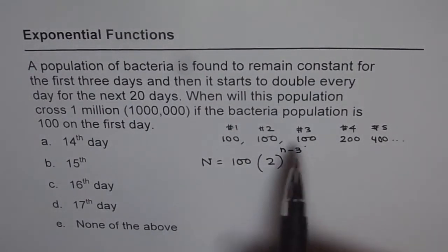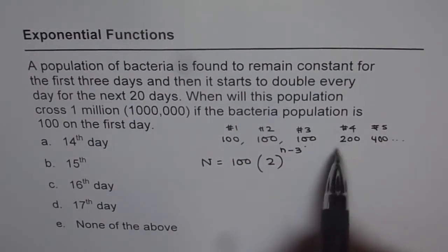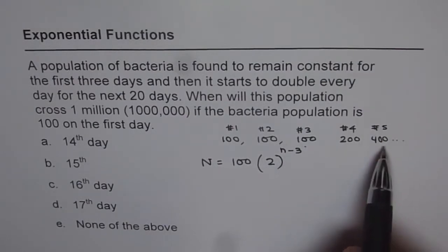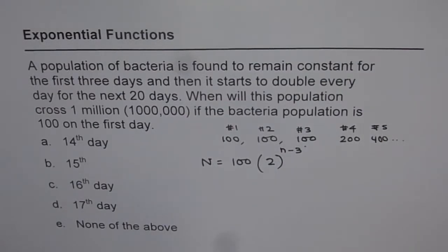Well, you can verify this formula. If you put n as 4, then you get 200. If you put n as 5, you do get 400. So the formula is perfectly correct.